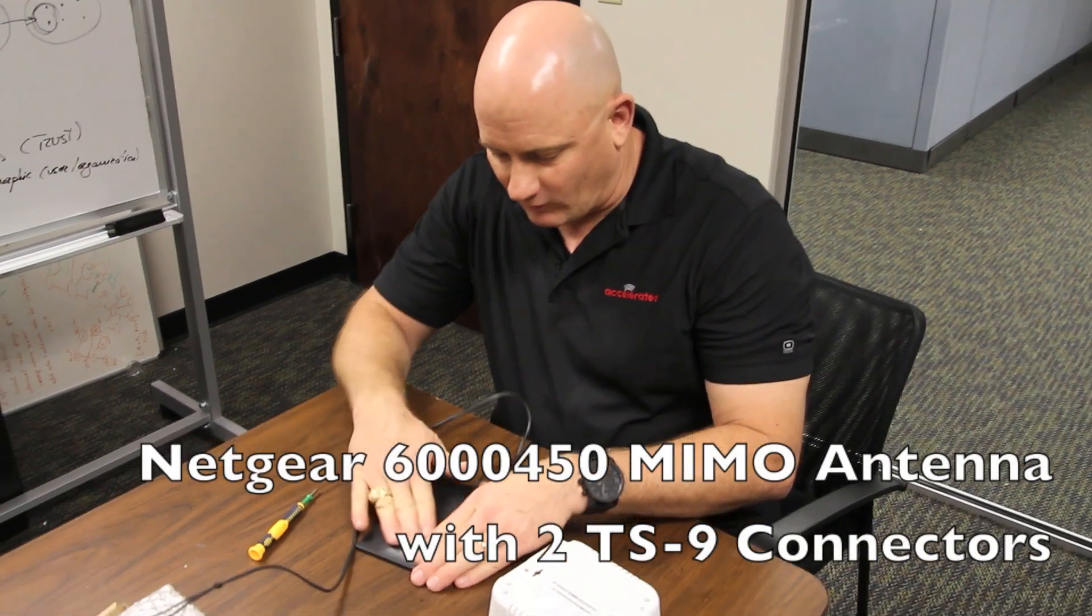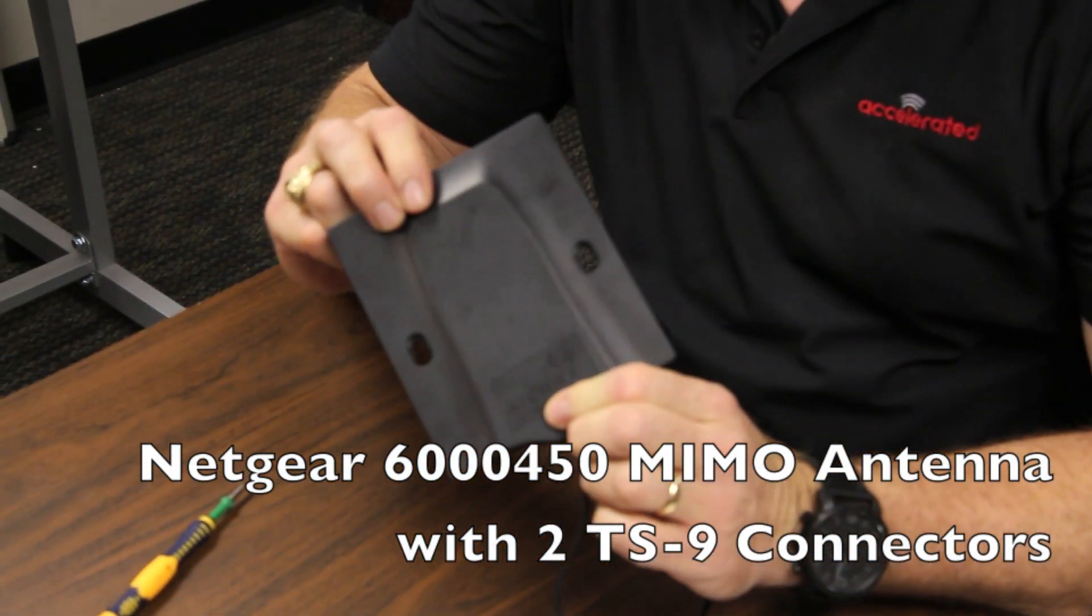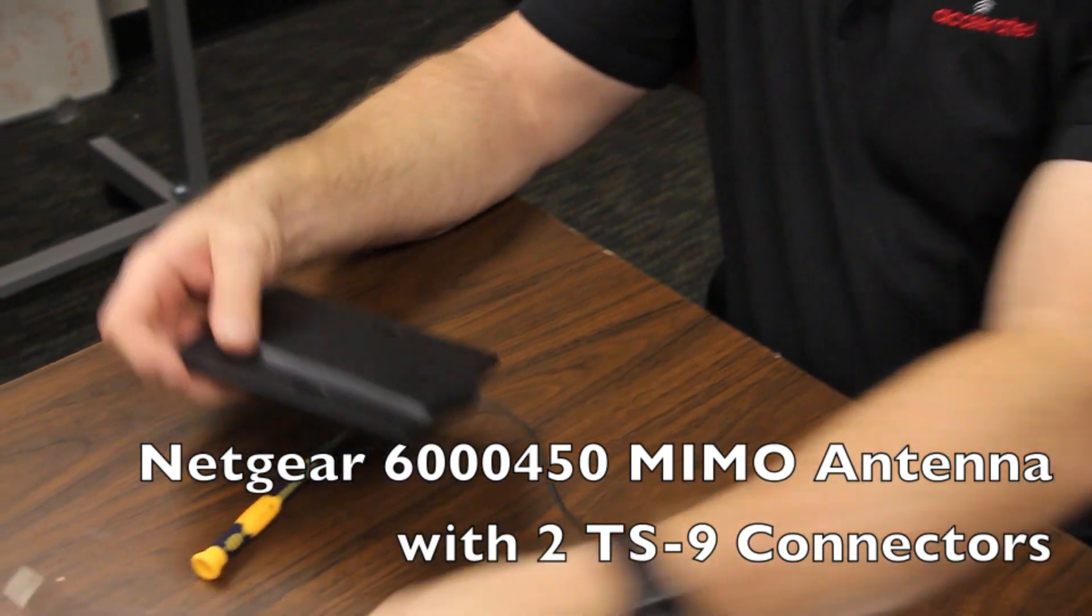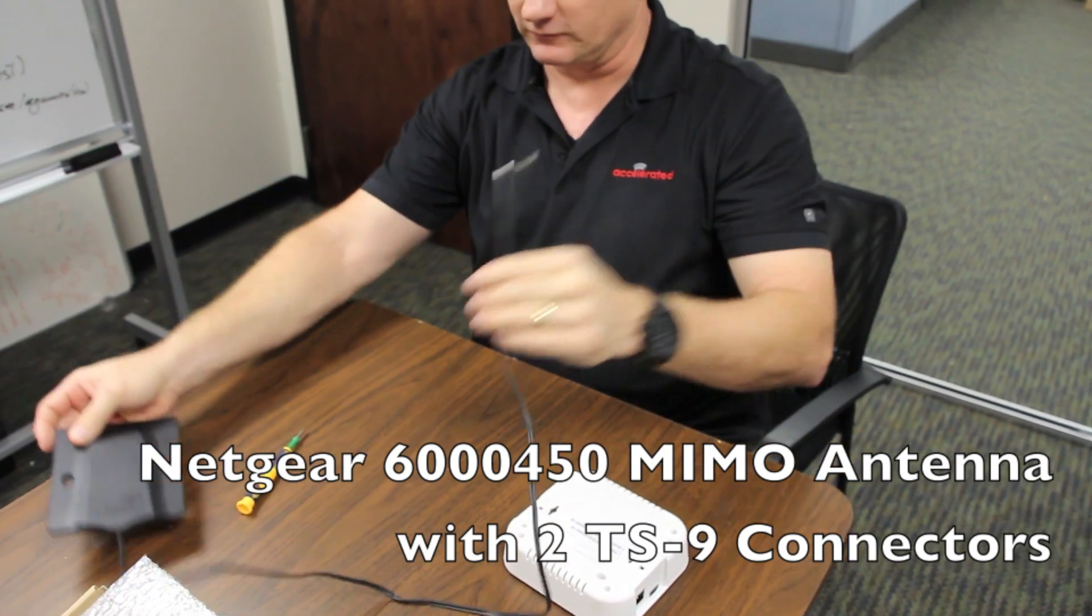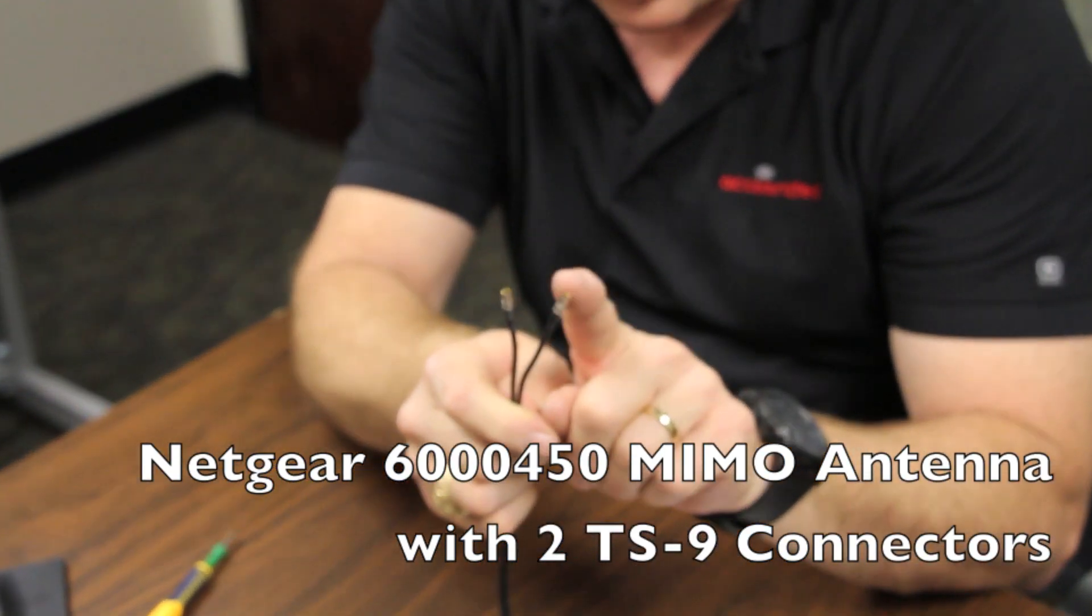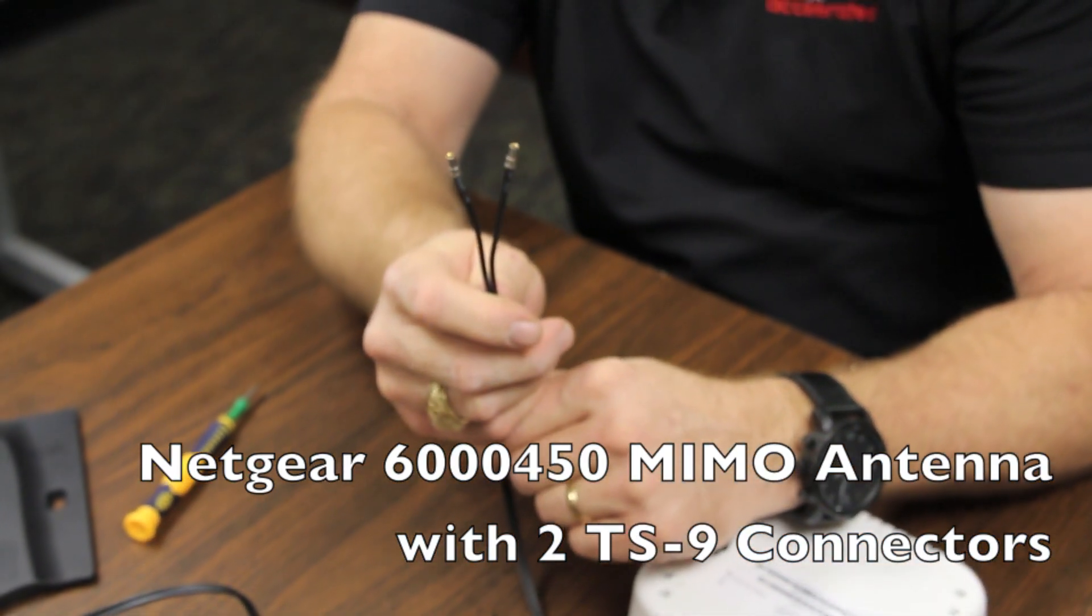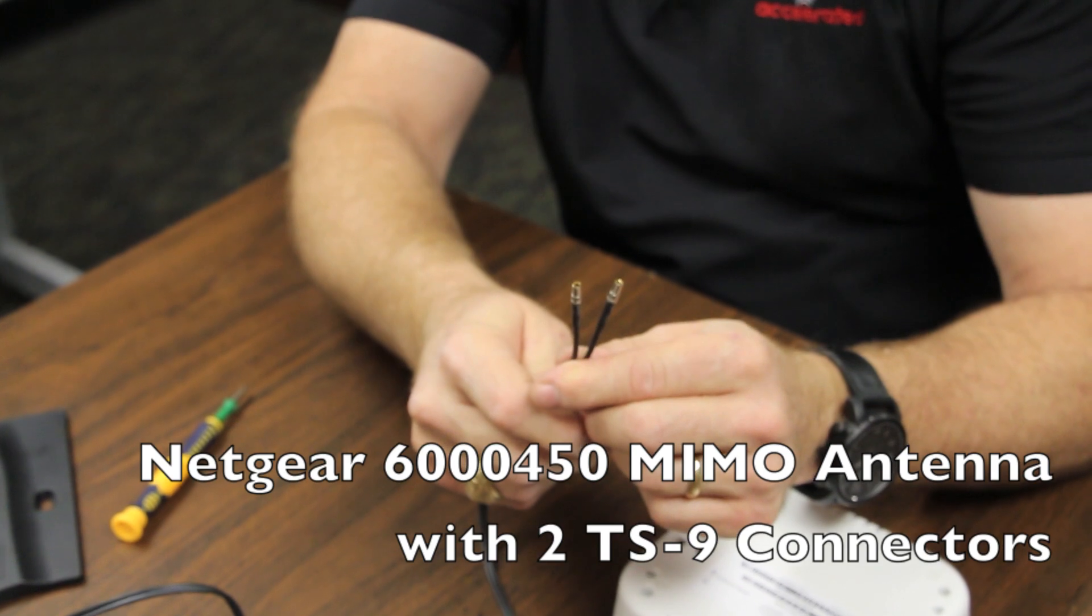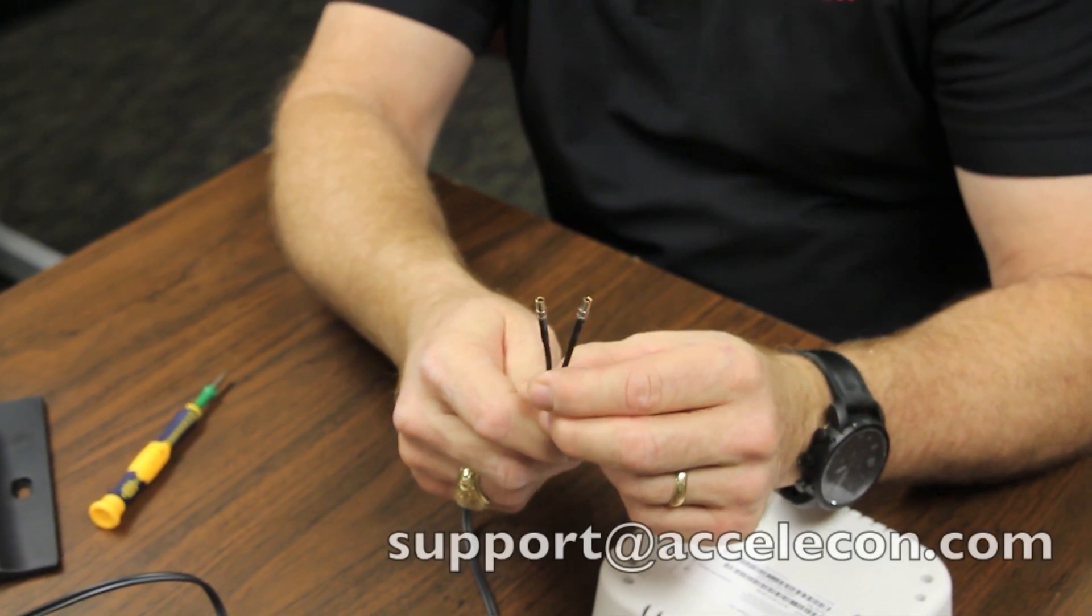Since you are still watching, let's talk about external antennas. The one we are going to recommend here for this application is a Sierra wireless, it is actually made by Netgear now. It has a short, I would say 1 meter, 3 foot piece of lead on it and two TS9 connectors. These connectors are important because the device we are going to put it on is the AT&T Momentum which has TS9 connectors. All Sierra wireless do. Others have CRC9 and others.